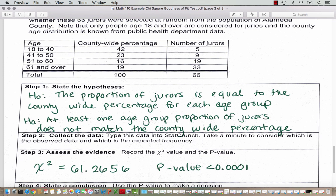Take a minute to consider which is the observed data and which is the expected frequency. The number of jurors is what we actually got from the sample of jurors — that's our observed data. The county-wide age percentages hold true for the whole county, so that's what we would expect to see if the jurors match the county-wide distribution. Let's go into StatCrunch and do some analysis.